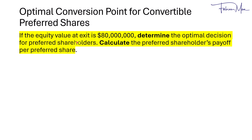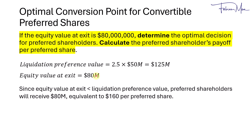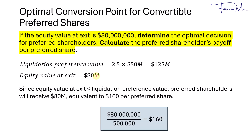In the first scenario, the equity value at exit is $80 million. The liquidation preference value is $125 million, but the equity value at exit is less than the liquidation preference value. It is impossible for the preferred shareholders to claim $125 million when the equity value is lower. In this case, the preferred shareholders will receive only $80 million, equivalent to $160 per preferred share — that is $80 million divided by 500,000 shares.